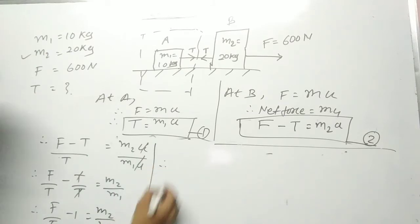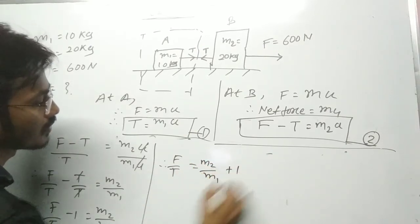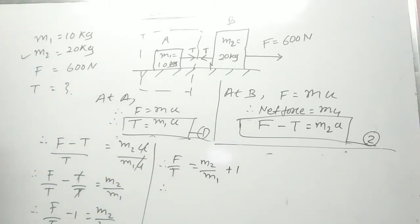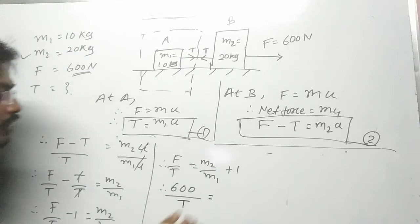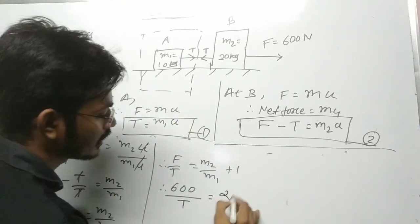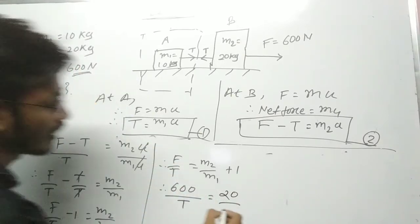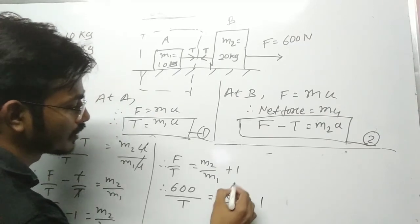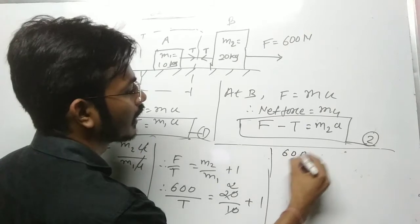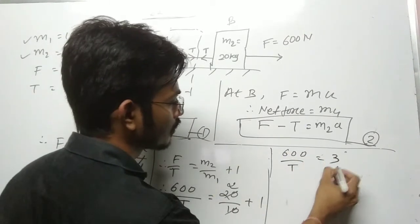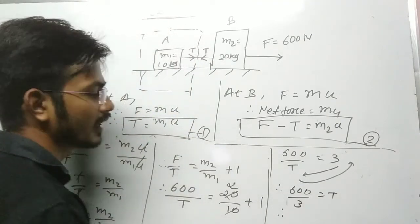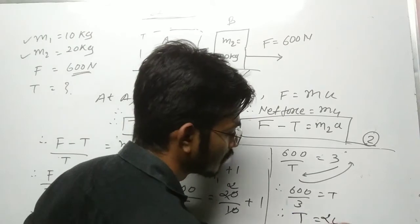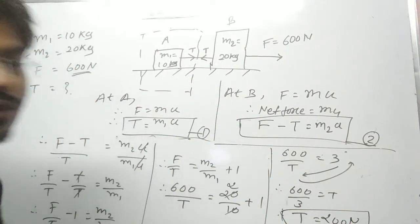Therefore F/T = m2/m1 + 1. Now putting all values: F = 600, T is what we find, m2 = 20 kg, m1 = 10 kg. So 600/T = 20/10 + 1 = 2 + 1 = 3. Therefore T = 600/3 = 200 Newton. So the answer for Case number one: tension = 200 Newton.